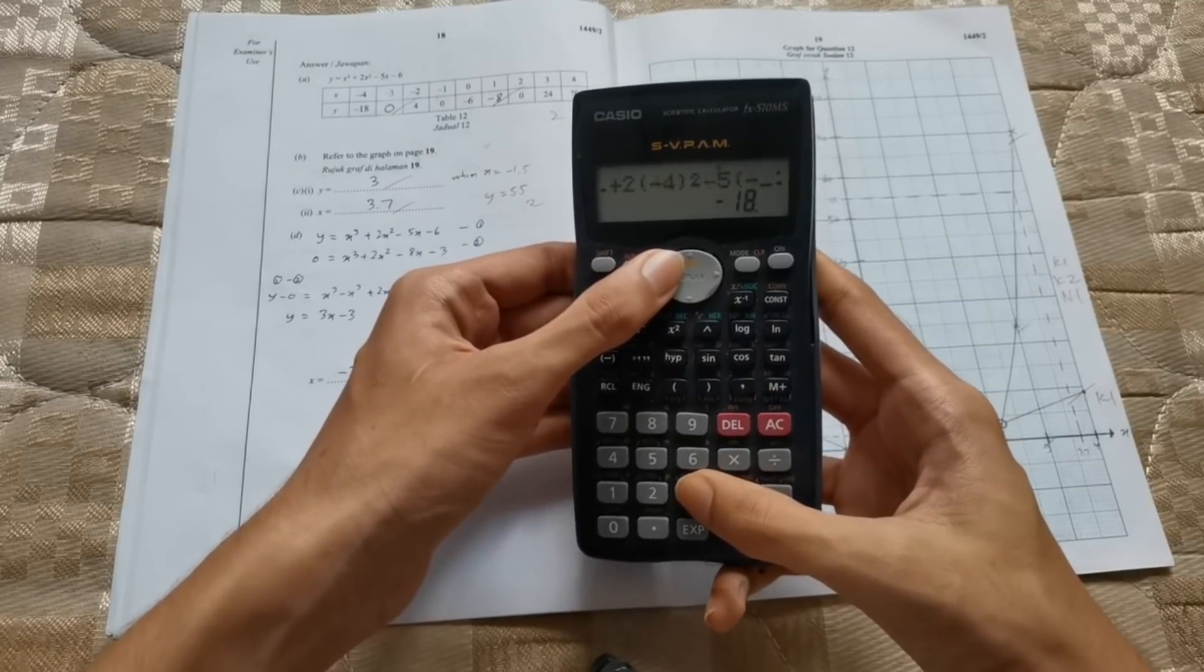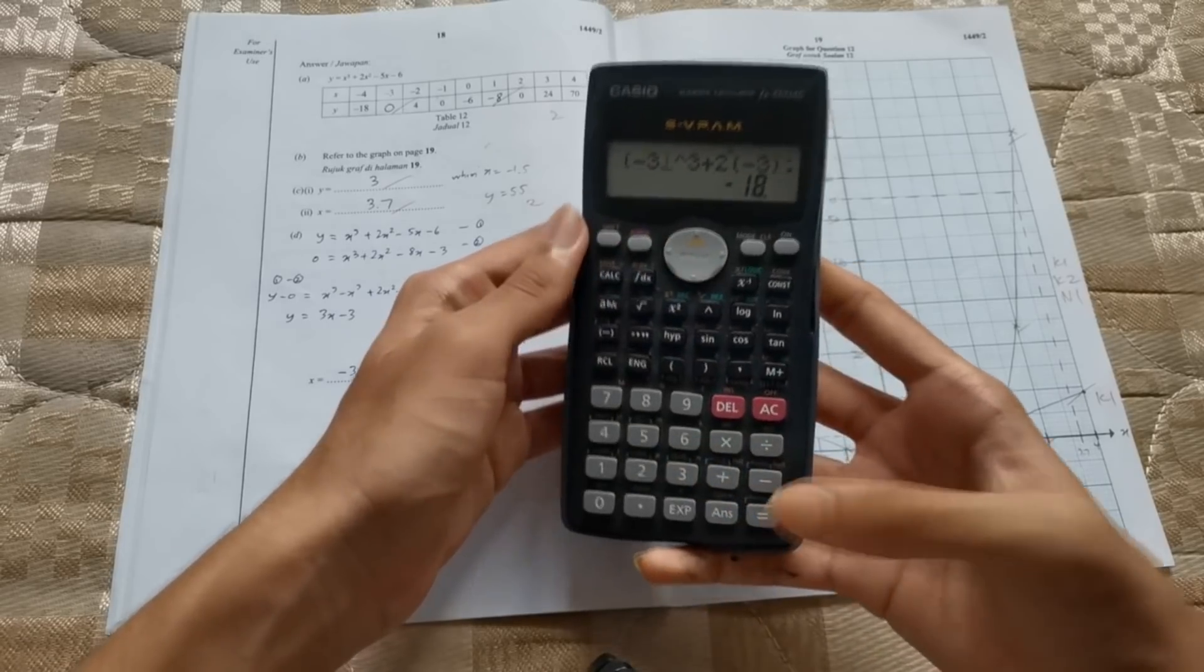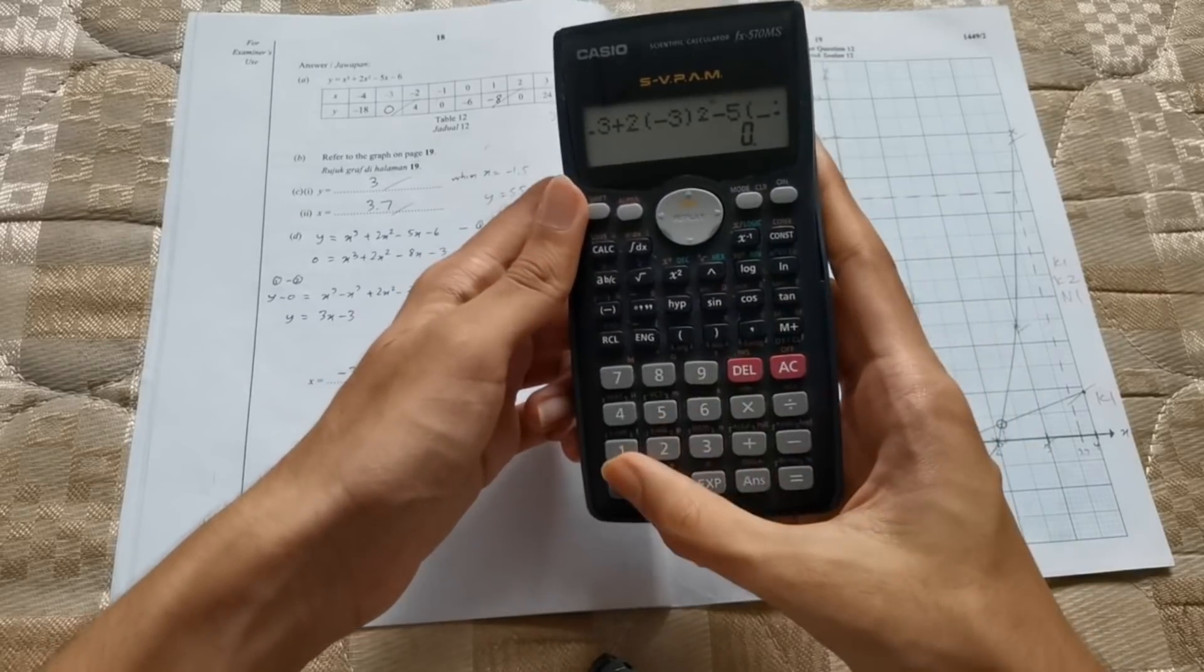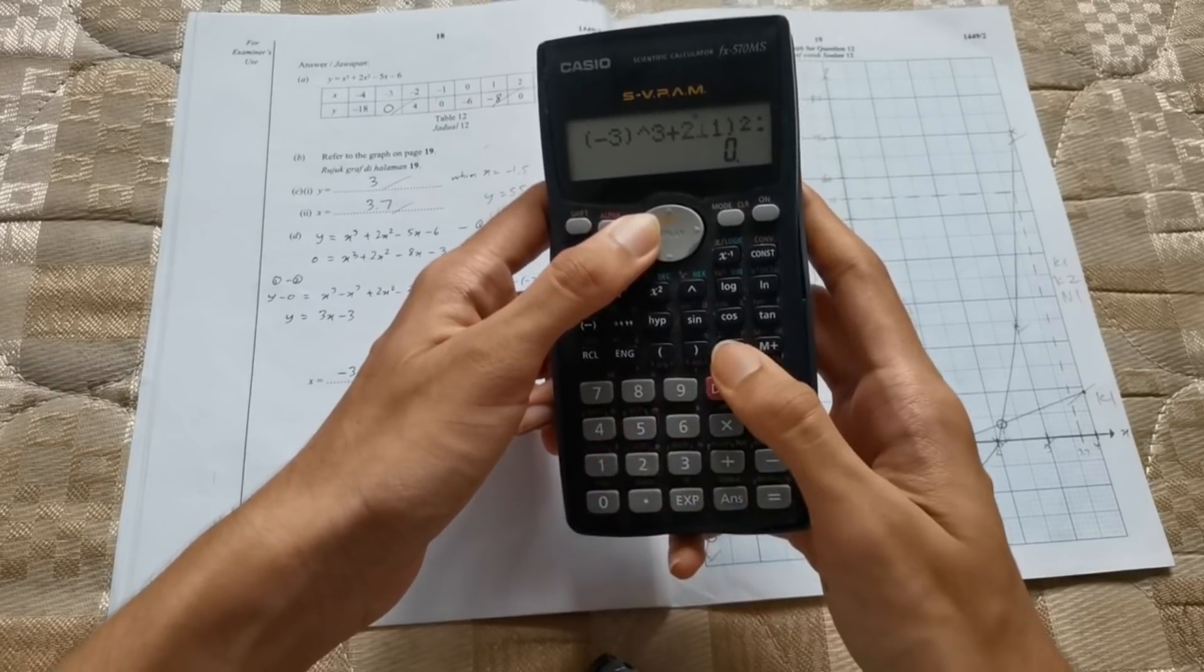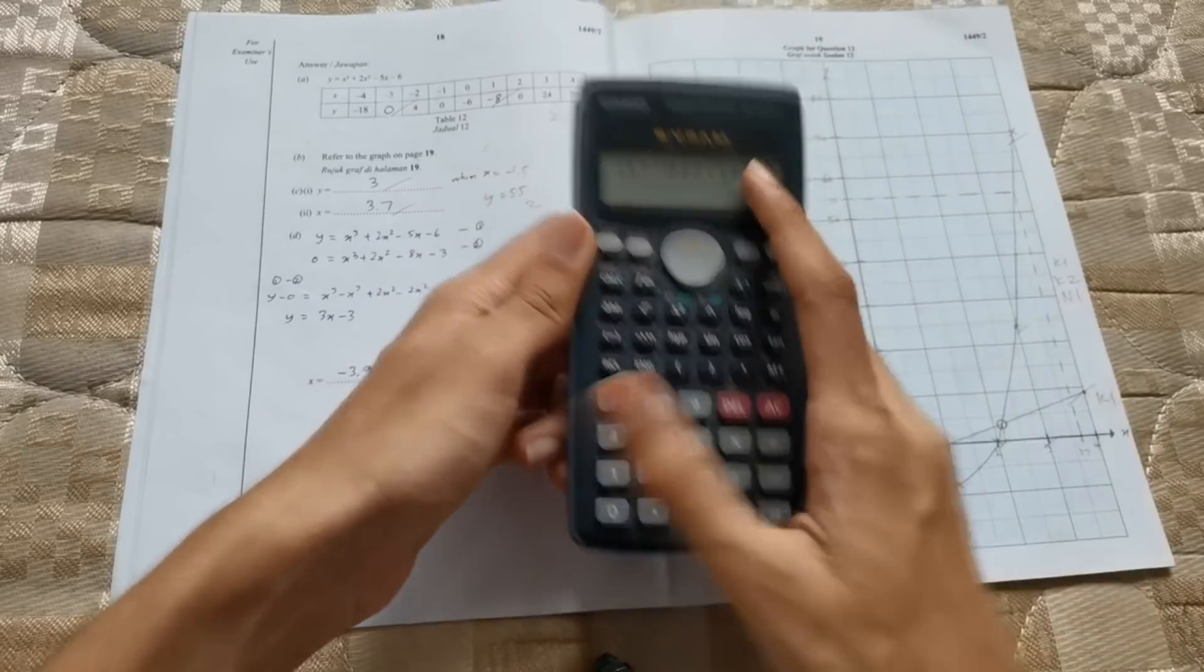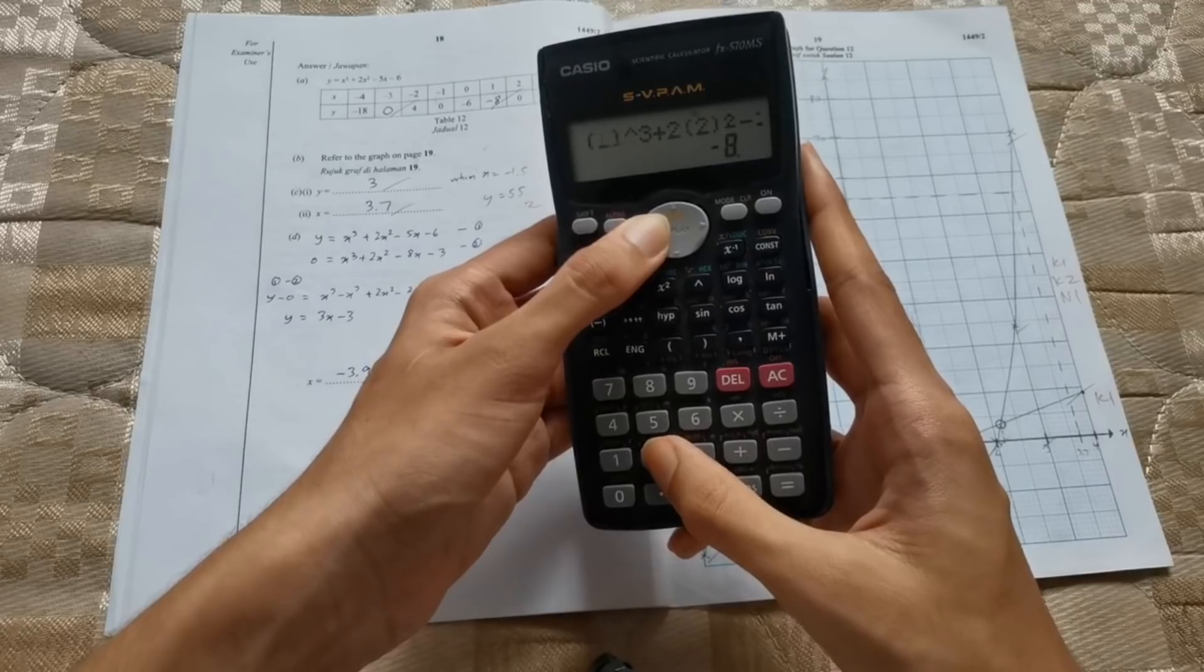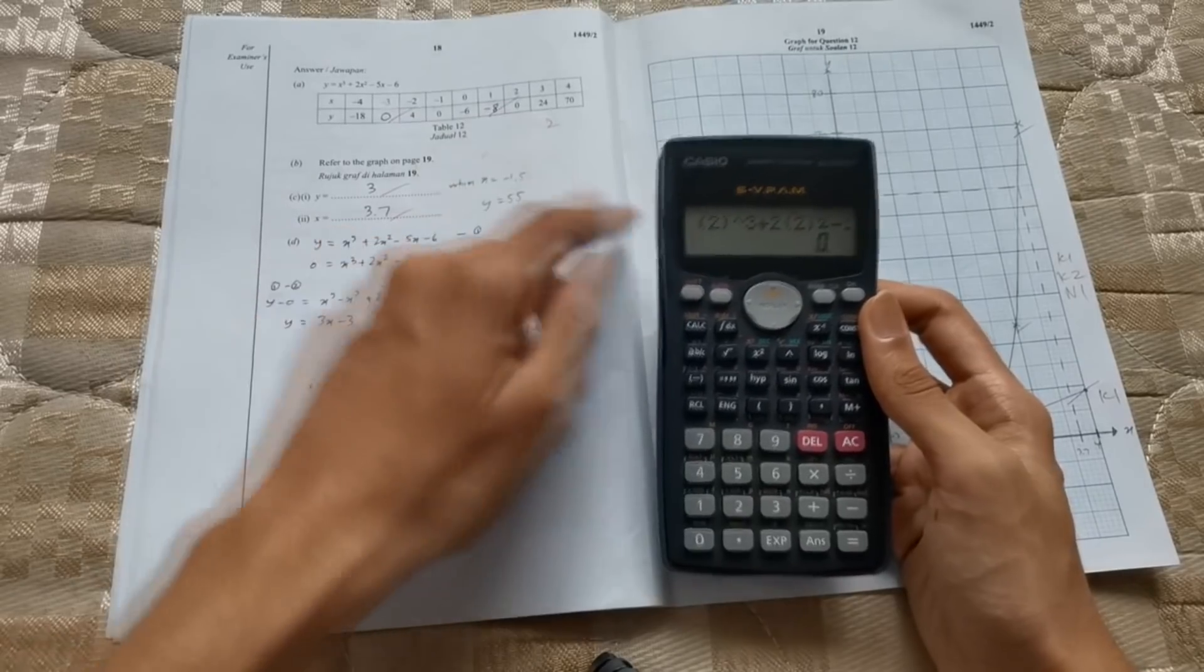So now I just replace all the 4s with 3s. I won't press on and reset everything. I'll just use the arrows, move about and change all the 4s with 3s. And then I press equal again, I get 0. Now I do the exact same thing again. I replace negative 3 with 1. I press equal, I get negative 8. And once again, just to check, I will change all the 1s with 2s. Equal, I get 0. Now I have confirmed that 0 and negative 8 are indeed the correct answer.